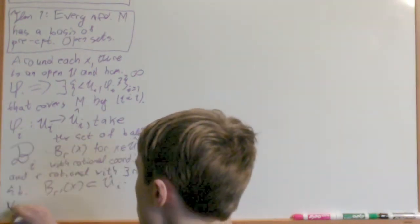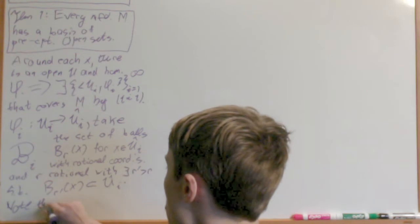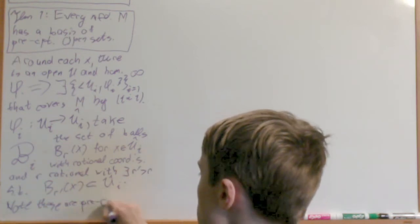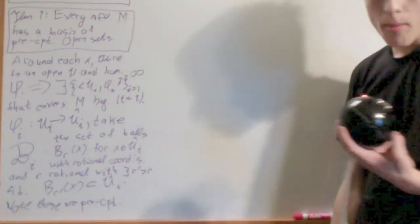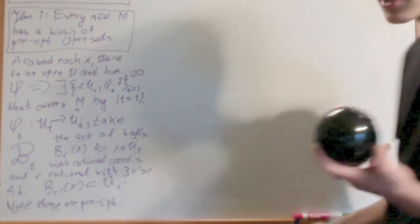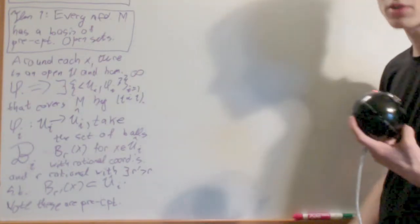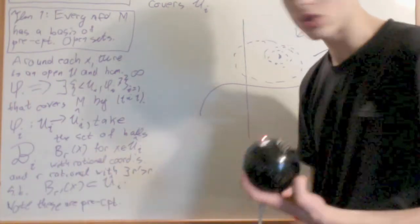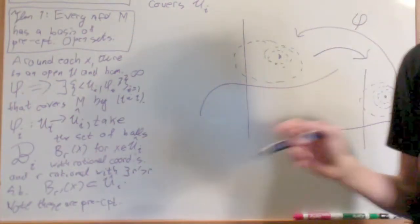Note, these are precompact by what I said before. Their closures are compact in both the open set and in the entire real numbers. B_I here is countable because everything is rational. Products of countable spaces is countable.